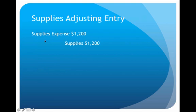That entry not only shows the expense, but it also lowers the asset. Crediting an asset lowers it, so it takes that $2,000 balance all the way down to $800, which is what we want it to be.